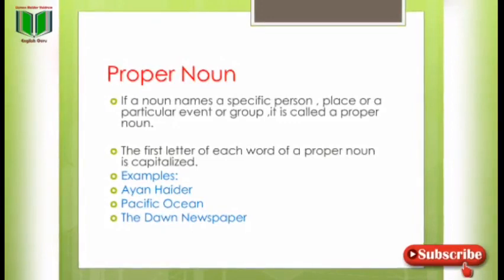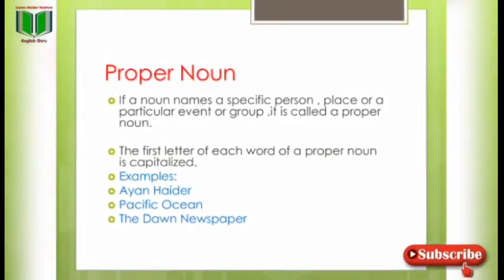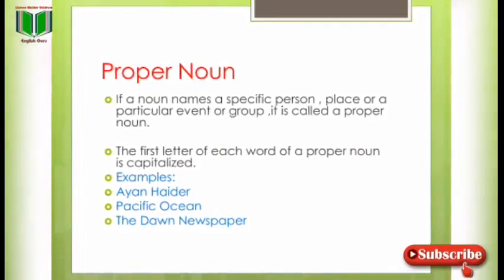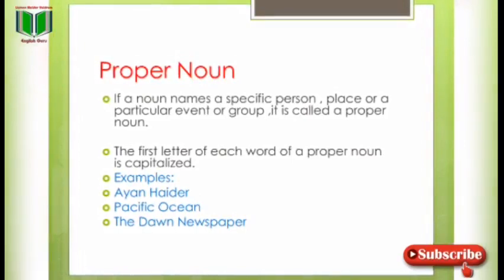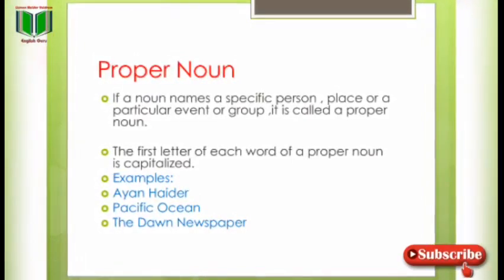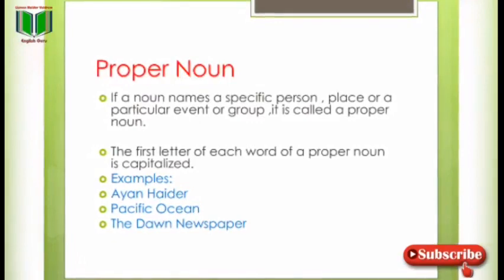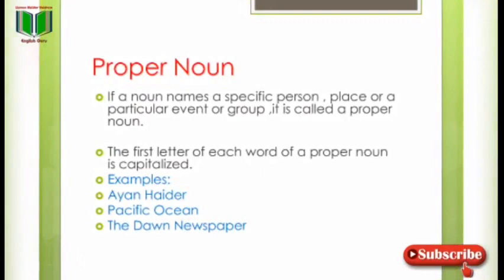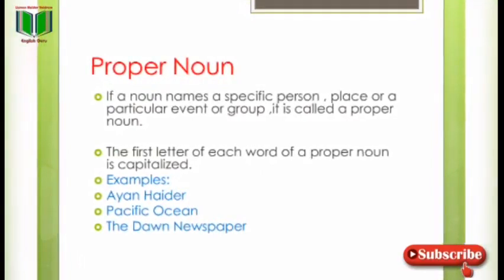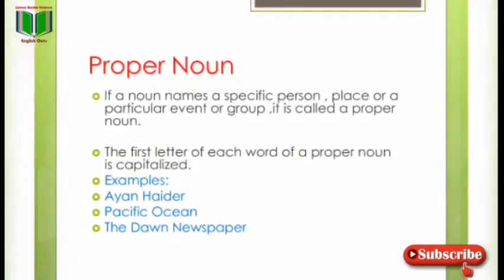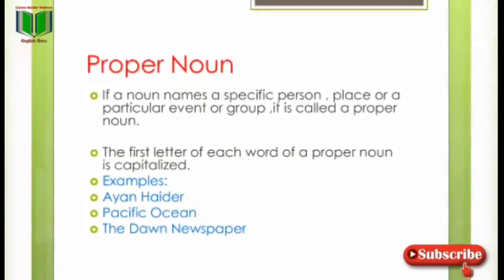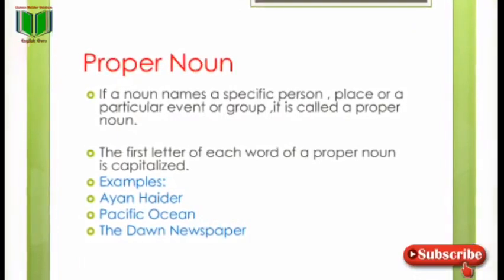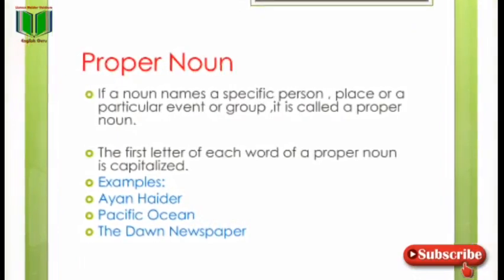Proper noun — اس کے kinds میں سب سے پہلی kind proper noun ہے۔ If a noun names a specific person, place, particular event, or a group, it is called a proper noun. The first letter of each word of a proper noun is capitalized. Examples: I am Heather, Pacific Ocean, The Dawn Newspaper. Proper noun میں معرفہ ہے — کسی خاص شخص، جگہ یا چیز کا نام — اور اسے لکھتے وقت پہلا letter ہمیشہ capital ہوگا۔